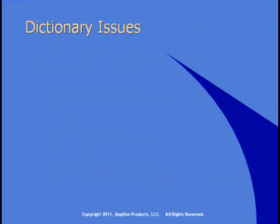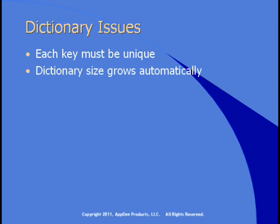Every key has to be unique in a dictionary. If you attempt to add multiple keys with the same value, the dictionary class raises an exception. The dictionary size grows automatically — although it uses an array internally, just like List, you don't have to think about it. As you add items to the dictionary, the class maintains its internal array, growing it as needed.